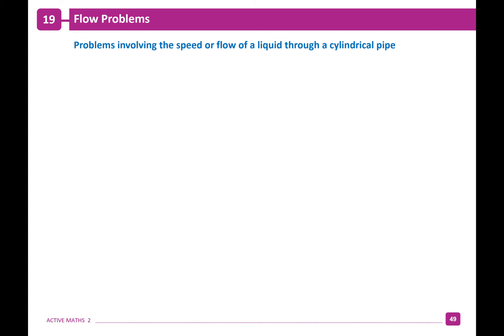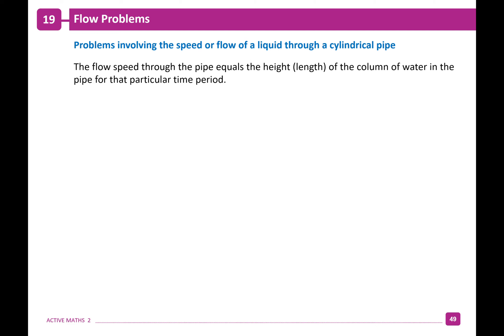The last type of questions are called flow problems — problems to do with a liquid flowing through a cylindrical pipe. The flow speed through the pipe equals the length of the volume of water in that pipe for a particular time period. For example, if water flows at a rate of 10 centimeters per second through a cylinder, then in one second you have a cylinder that's 10 centimeters long, full of water.